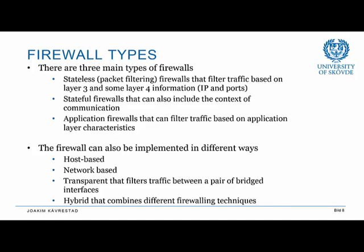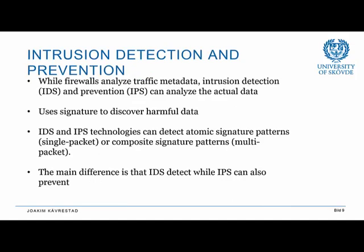Now let's talk about intrusion detection and prevention — IDS and IPS systems. Firewalls analyze traffic metadata: addressing, port numbers, session data. IDPSs — the term I use for both IDS and IPS — can analyze the actual data. They use signatures to discover harmful data, similar to an antivirus program that uses virus definitions, but at the network layer. They can actually unpack data packages sent over the network, check if the content is harmful, and take action.